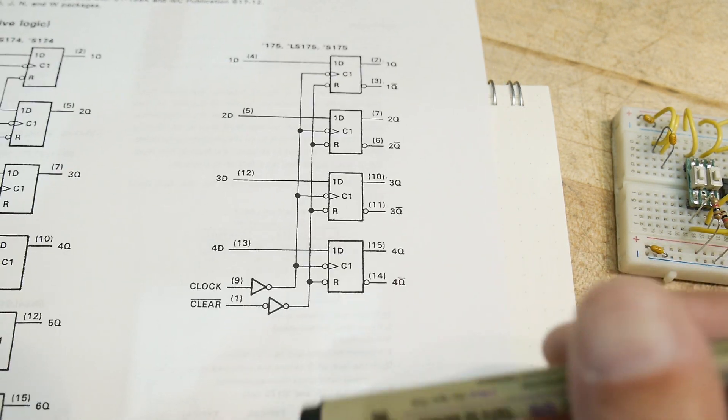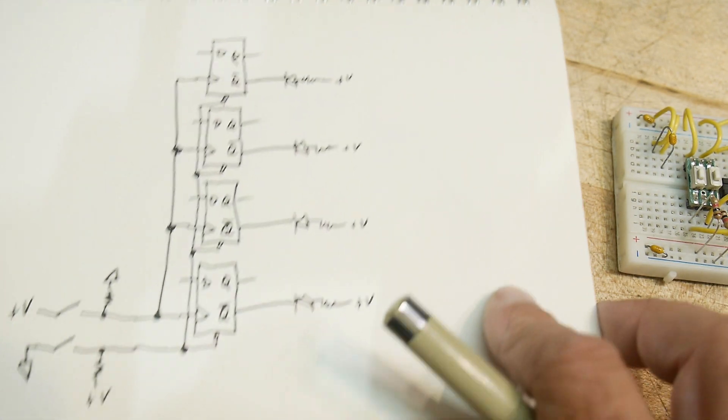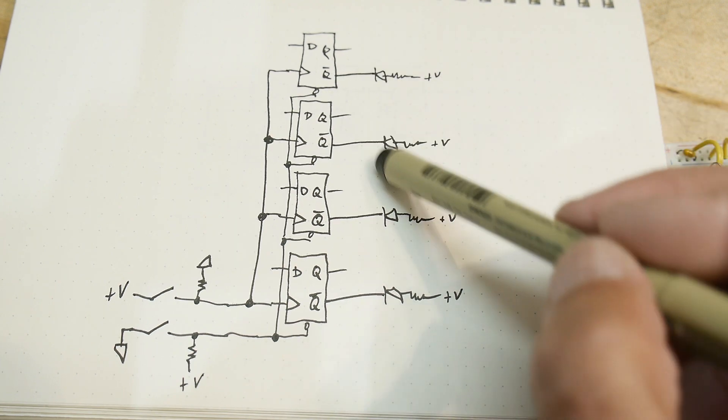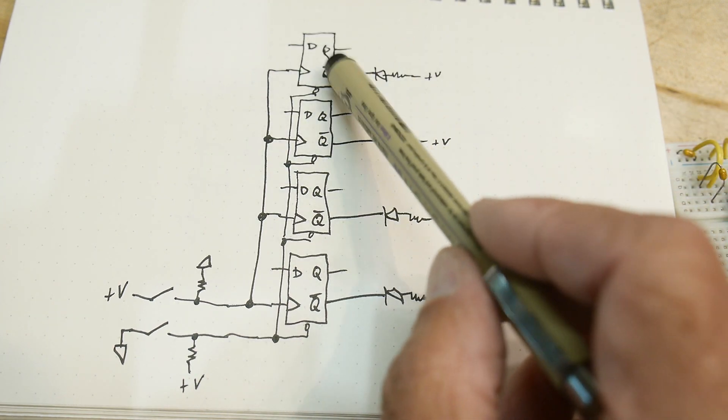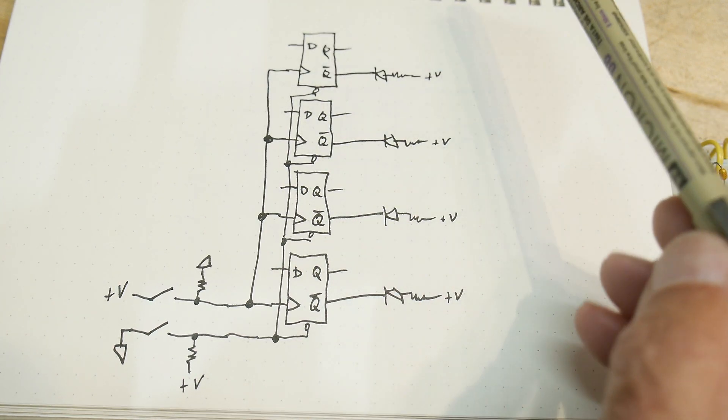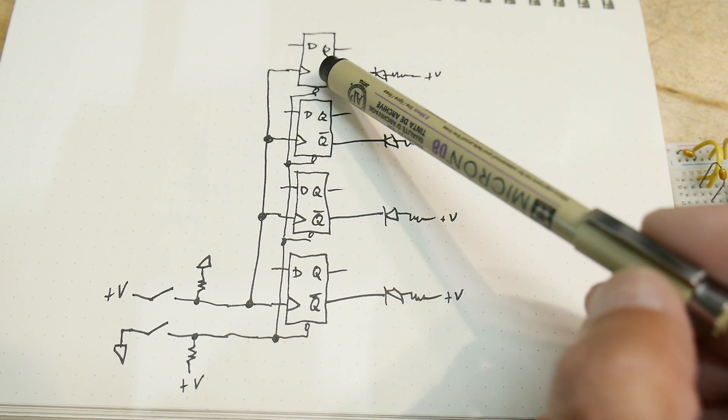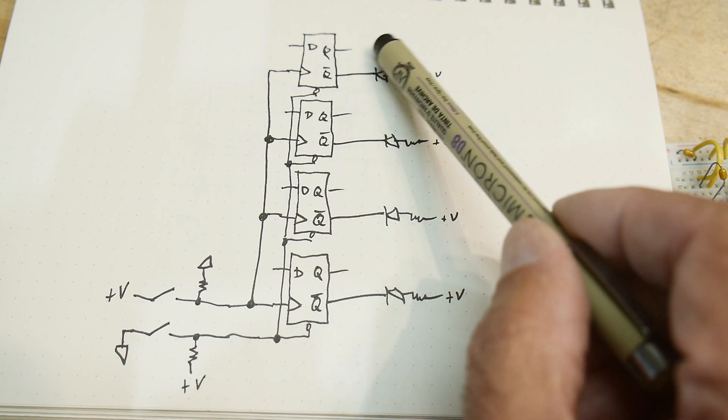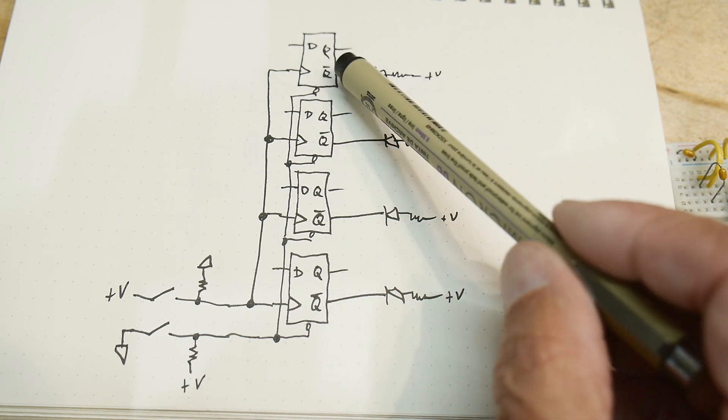So, we are going to hook up a circuit like this. Okay. So, this will be our circuit. We'll have LEDs, and the LEDs will be on the not Q. All right. So, if the Q is a zero, then the not Q will be a one.